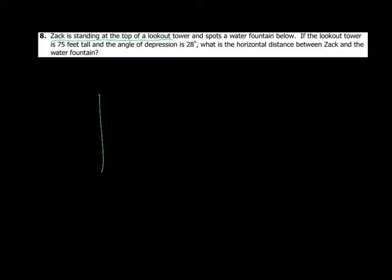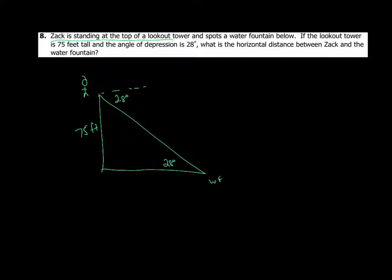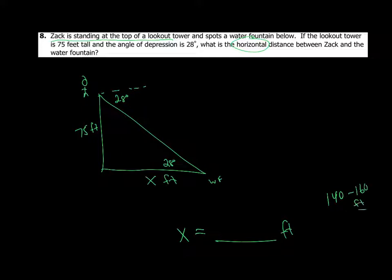Zach is standing on the top of a lookout tower and spots a water fountain below. The lookout tower is 75 feet tall, and the angle of depression is 28 degrees — by alternate interior angles, 28 degrees inside the triangle. What is the horizontal distance between Zach and the water fountain? That's x feet. Finish to the nearest tenth of a foot — the answer is somewhere between 140 and 160 feet as a guideline. Finish this up and then check in the notes.